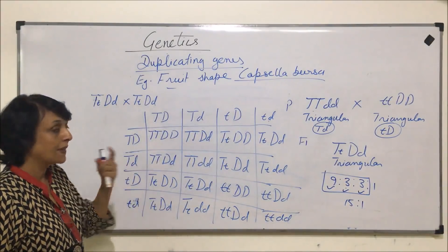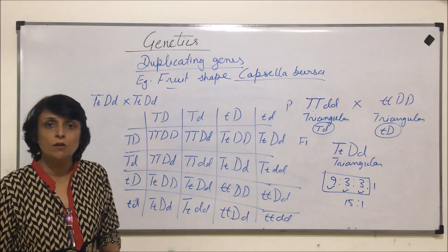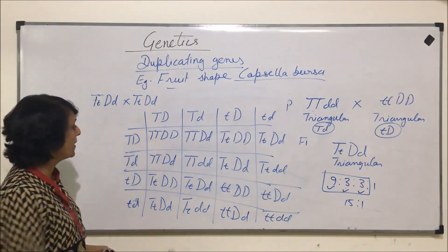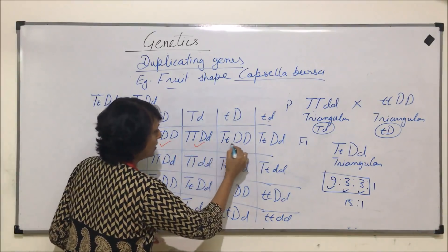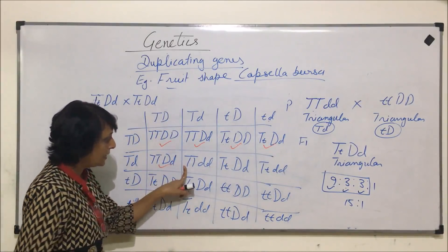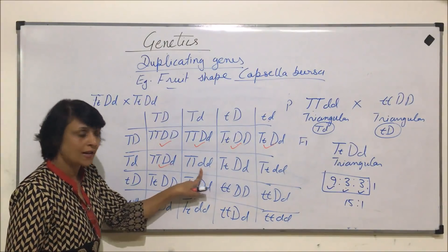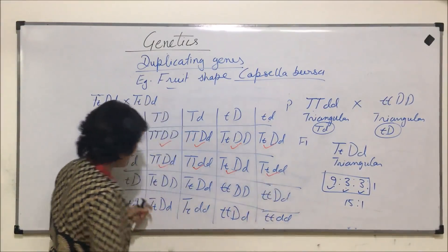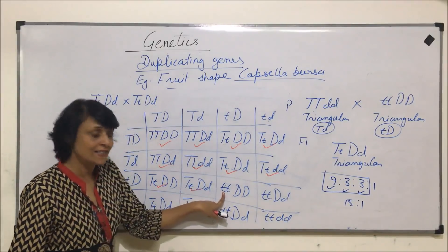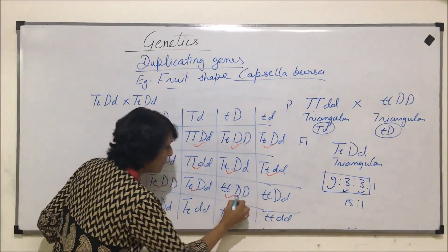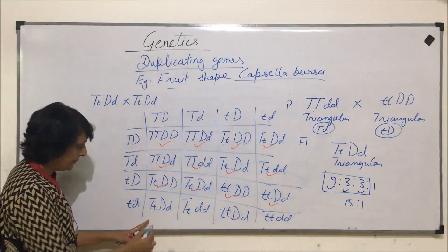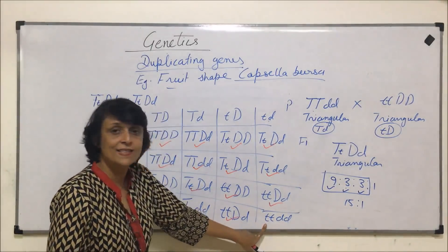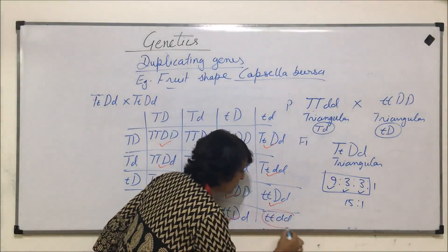Now we determine the fruit shape for each genotype. If T is dominant, the fruit shape is triangular. If D is dominant, the fruit shape is also triangular. If both are dominant, the shape is still triangular. Going through all 16 squares: wherever T or D (or both) is dominant, the shape is triangular. The only square where all alleles are recessive (ttdd) gives the elongated shape — and that is just one out of sixteen.